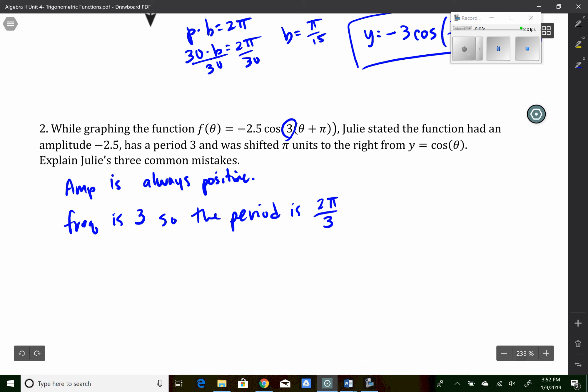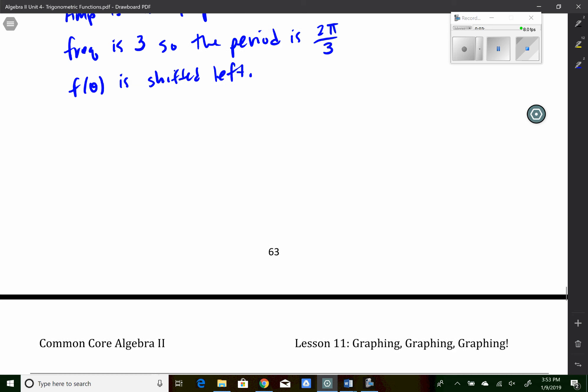And the last says that theta to the right, well, we remember in an equation, if something is added, it's actually going to shift to the left. So we could say the function f of theta is shifted left. Not right. Those are her three common mistakes there, right? These are mistakes I see people make every year in my classes.